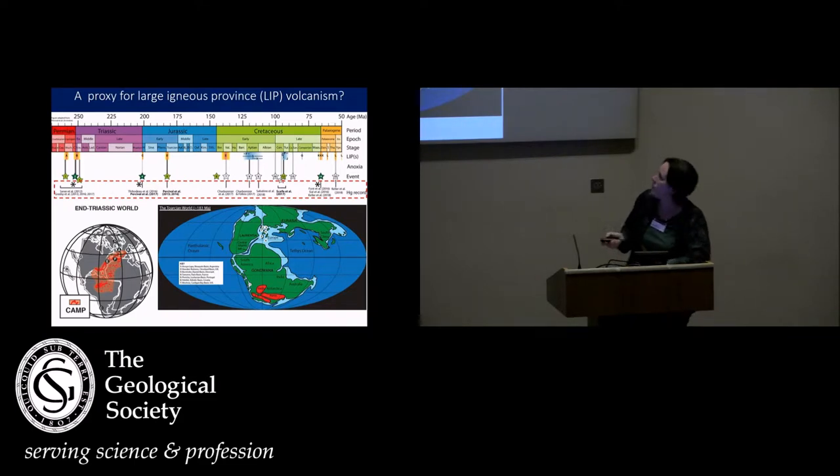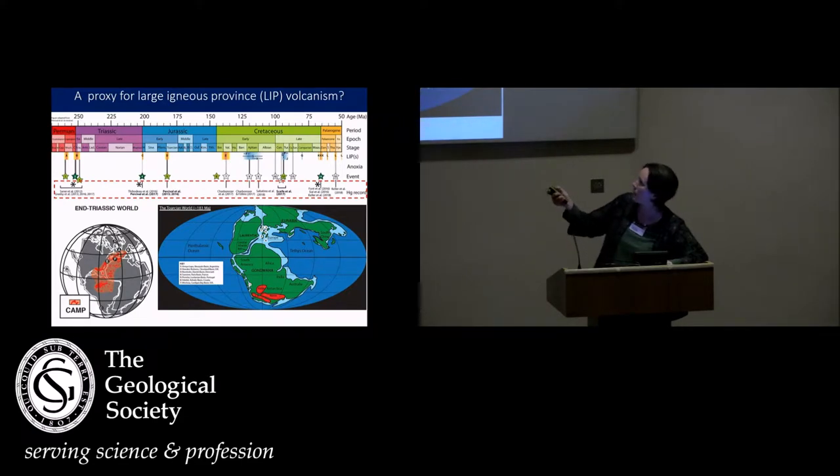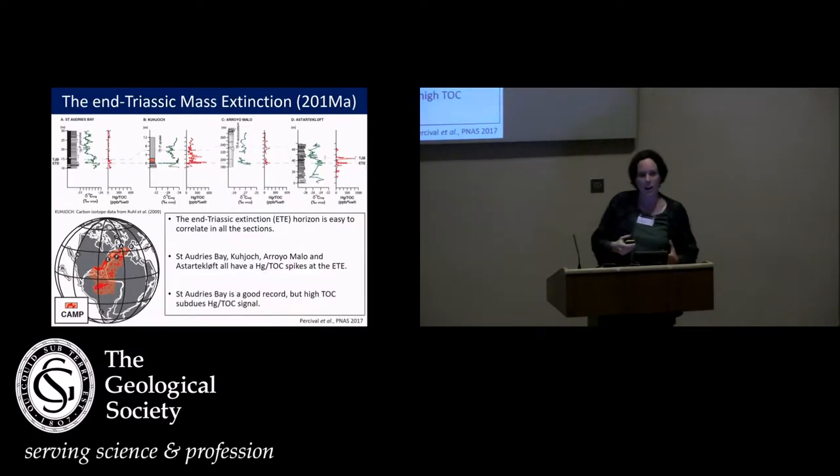So the two periods I'm going to look at are the end-Triassic and then the Toarcian as well. So the end-Triassic is linked to the CAMP volcanism, the Central Atlantic Magmatic Province, and of course also linked to a really major mass extinction event, one of the so-called Big Five. The Toarcian is an oceanic anoxic event and is linked to this high-latitude Karoo-Ferrar igneous province here. In the interest of staying in time order, I'm going to start with the end-Triassic, although we actually did the Toarcian work first.